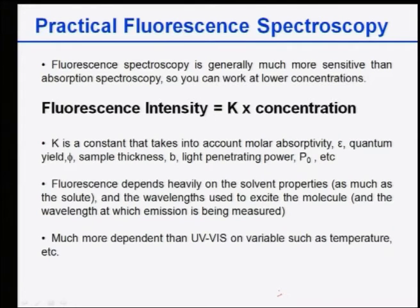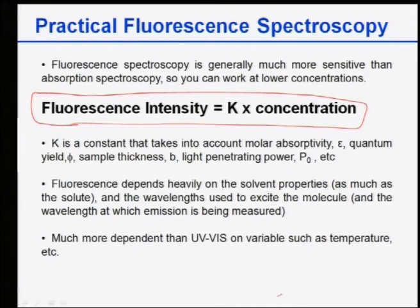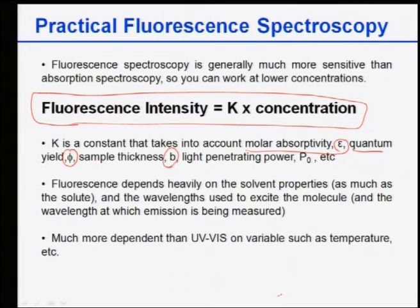Fluorescence intensity is given by: F = K × C, where C is the concentration of the molecule. K is a constant that takes into account the molar absorptivity ε (from Beer-Lambert law), the quantum yield Φ, the sample thickness, and the light penetrating power. This means intensity provides a way to measure concentration, provided K is known.